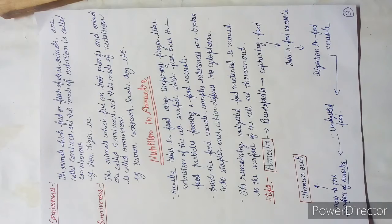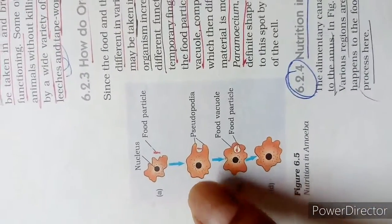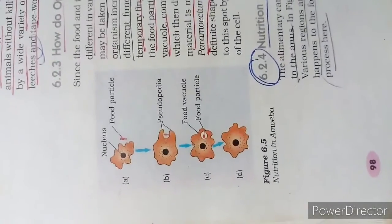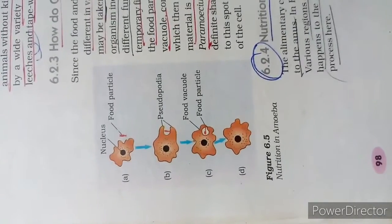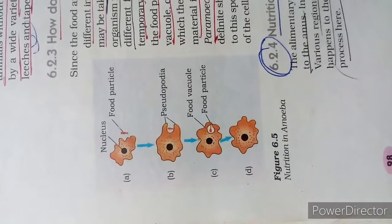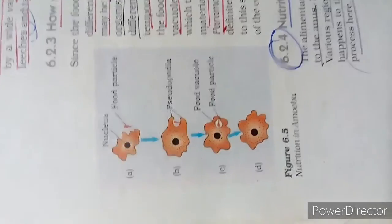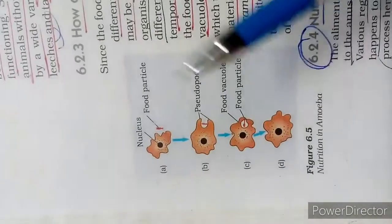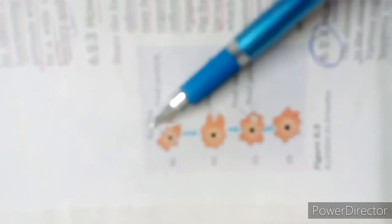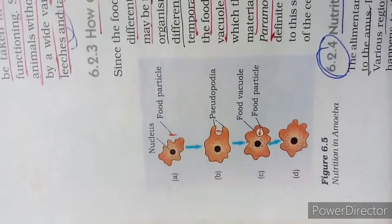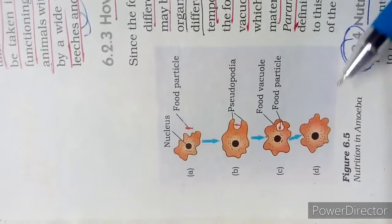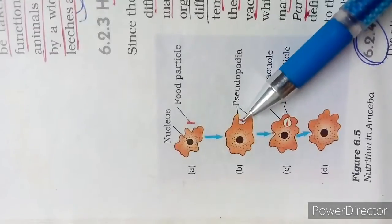Just see this diagram. This is the food particle and you will draw this diagram after this. This is the food particle, this is the nucleus, and there is an extension of the peripheral part of the cell. The amoeba has extensions around the food particle.